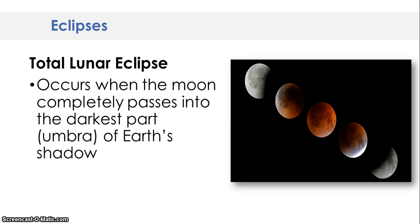Hey gang, sorry I couldn't be here today, so I wanted to make sure that you guys got finished up on your notes. Yesterday we talked about a total lunar eclipse and partial lunar eclipse. Just to refresh our memory, the total lunar eclipse occurs when the moon completely passes into the darkest part — the umbra of the Earth's shadow. The umbra is the darkest part.